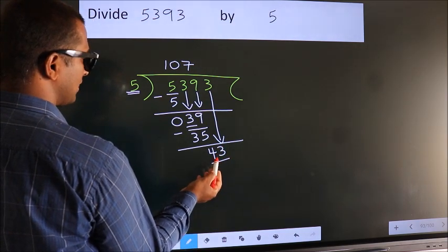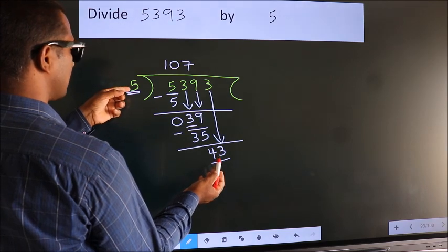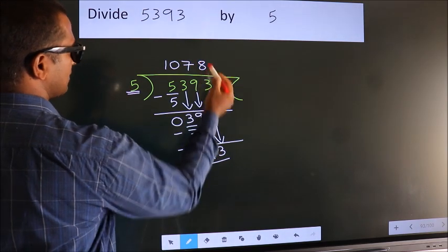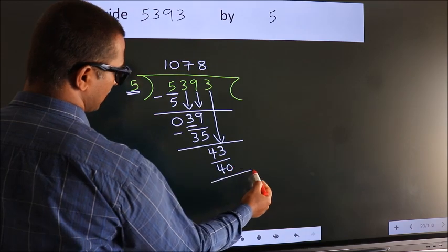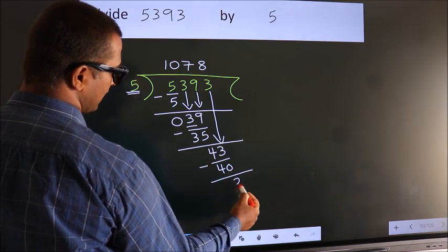A number close to 43 in 5 table is 5 times 8, 40. Now we subtract. We get 3.